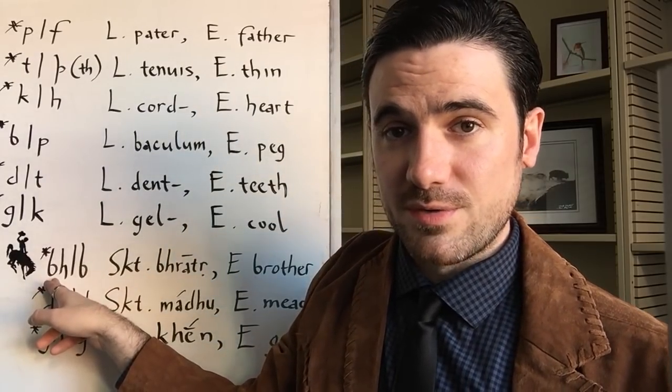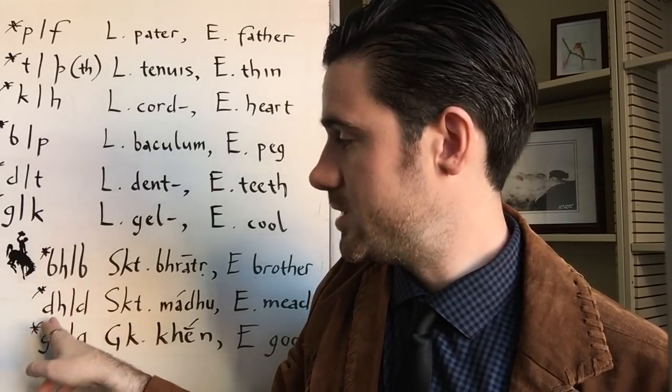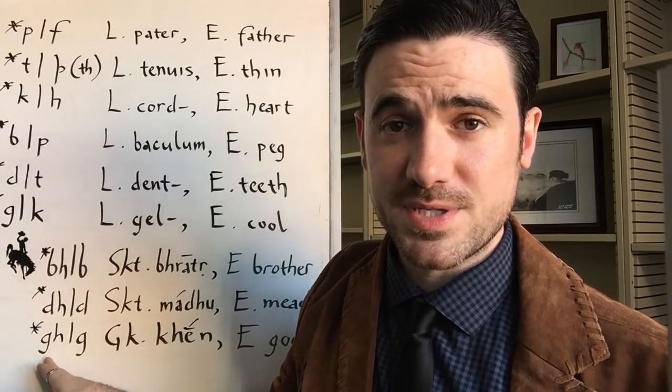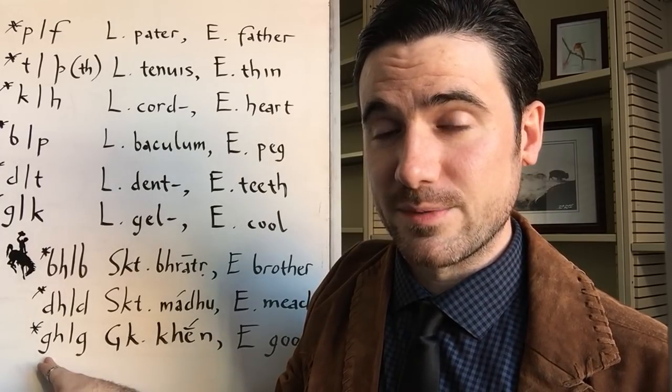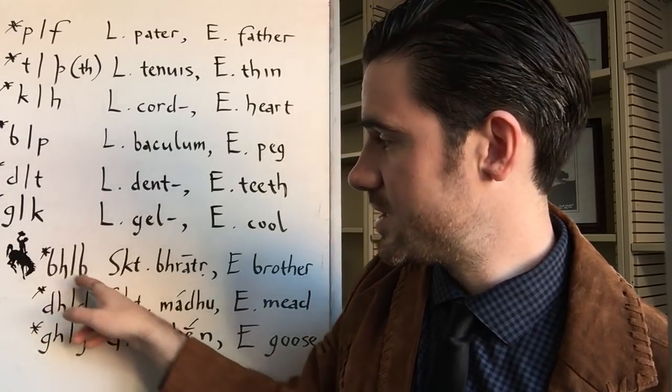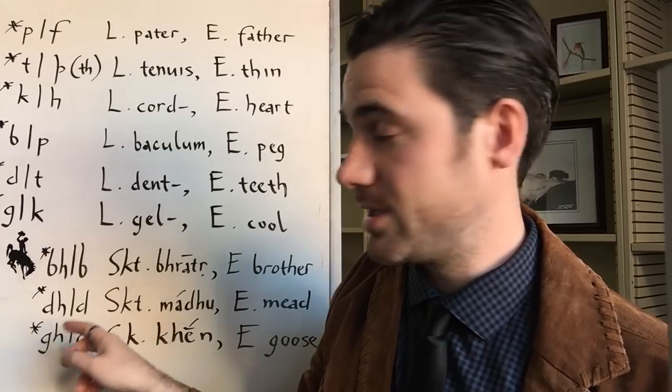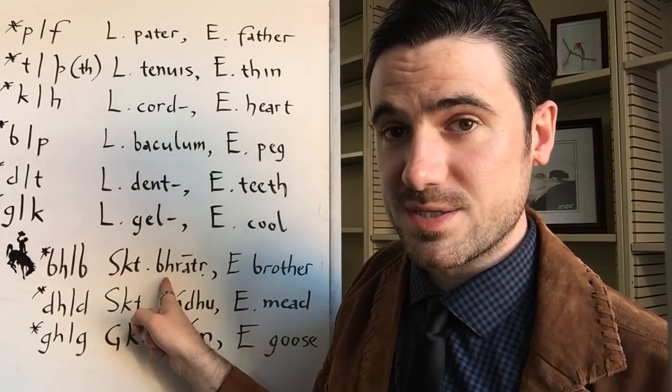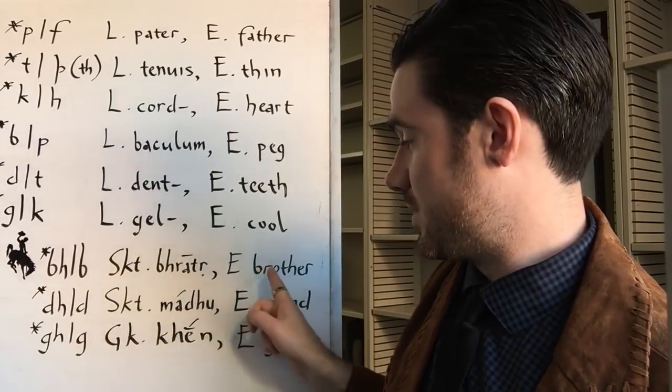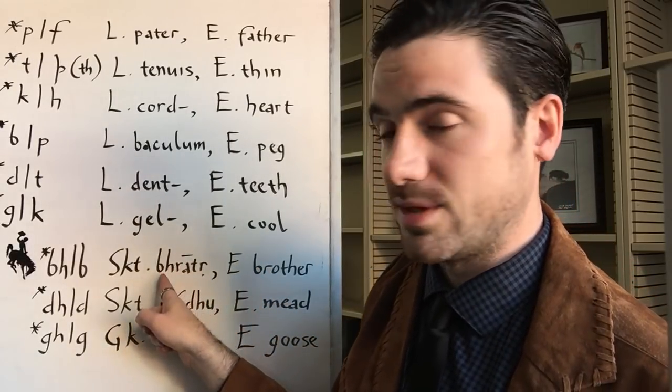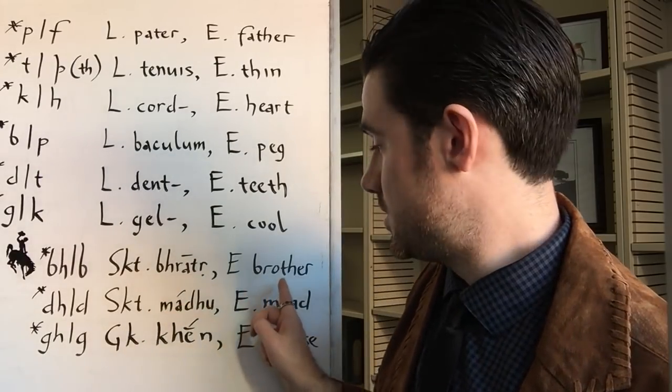Proto-Indo-European also had a series of voiced aspirates, so BH, DH, GH. I'm probably saying those poorly to someone with a fine accent for these things, someone who perhaps speaks an Indic language that still has these sounds. Since Latin also loses these, it's hard to use Latin as an example here, but I can use Sanskrit, which keeps them as an example. So for instance, Sanskrit bhratar is cognate with English brother, where we have the BH turning into just a B. Also notice another good example of T to TH.